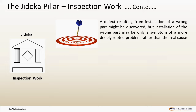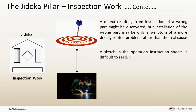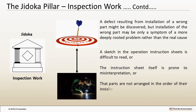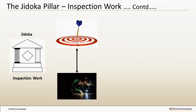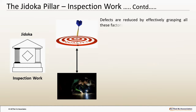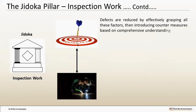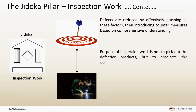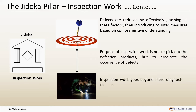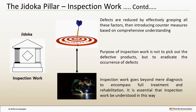Careful investigation might reveal that the wrong part was installed because a sketch in the operation instruction sheets is difficult to read, or the instruction sheet itself is prone to misinterpretation, or that parts are not arranged in the order of the installation sequence, or even that a team member is just inattentive. Defects are reduced by effectively grasping all these factors and then introducing countermeasures based on comprehensive understanding. Thus, the purpose of inspection work is not to pick out the defective product, but to eradicate the occurrence of defects. In a nutshell, inspection work goes beyond mere diagnosis to encompass full treatment and rehabilitation.